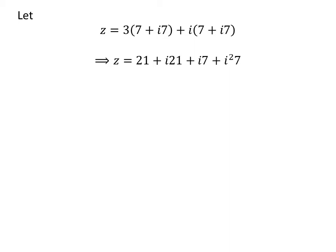Straight multiplication gives us z = 21 + i21 + i7 + i²7. We know square of imaginary unit i is minus 1.